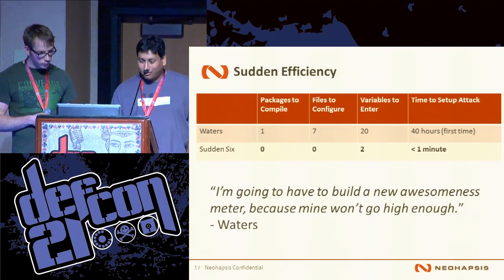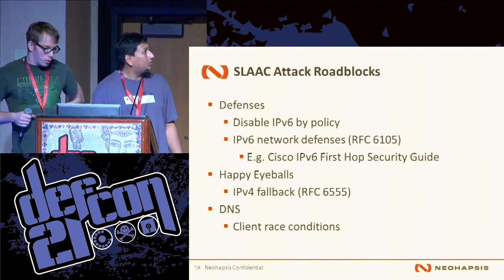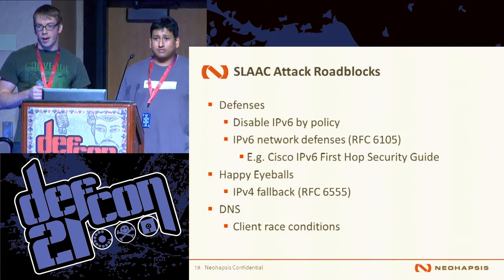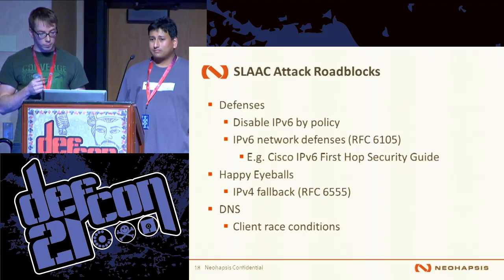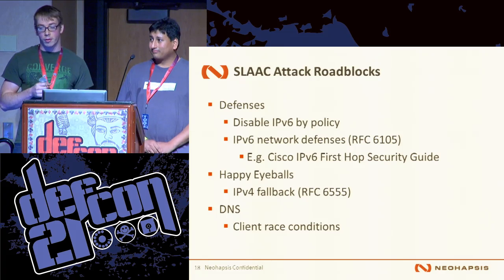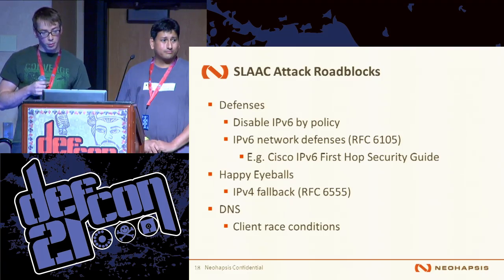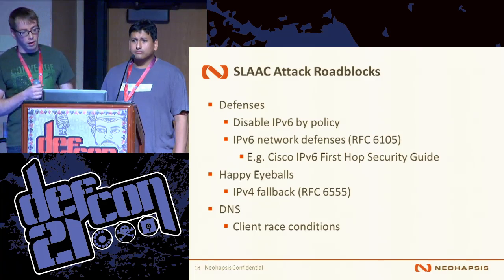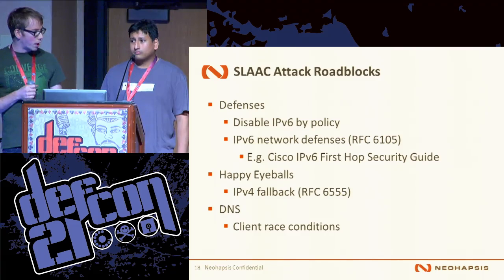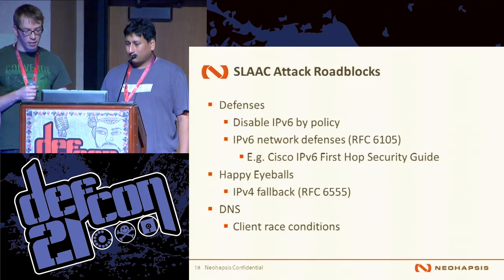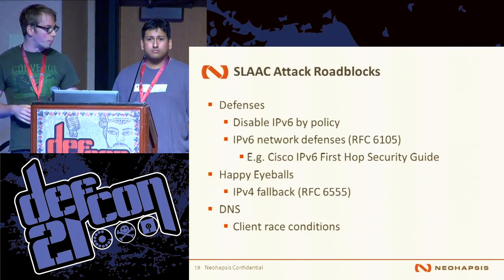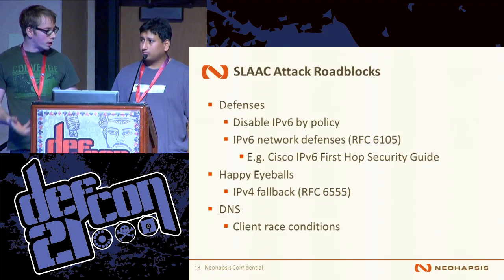Unfortunately, not all is rosy in IPv6 land. We do have a couple of issues with the attack as it is. The biggest one is disabling IPv6 by policy — if you're in an organization that has it turned off, this attack simply isn't going to work. In general, one nice thing about this attack is that any time you set up a new Windows host, IPv6 is turned on anyway, so unless explicitly turned off there's a good chance hosts have IPv6 enabled. We also have to watch out for IPv6 network defenses specified in RFC 6105. Cisco also put out a guide on protecting against first-hop attacks, including a technology called RA Guard — Router Advertisement Guard — that basically blocks our router advertisement packet from hitting any other ports on the switch.